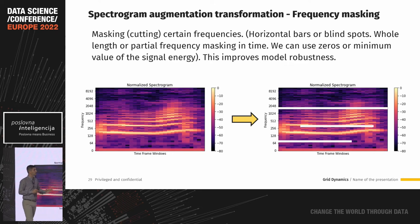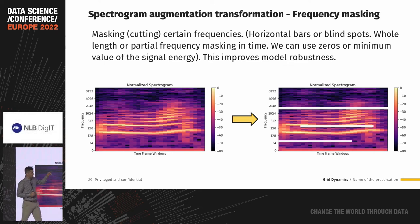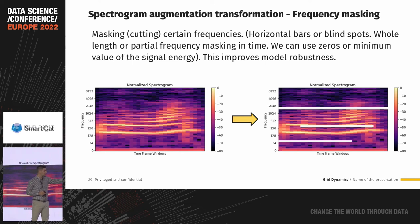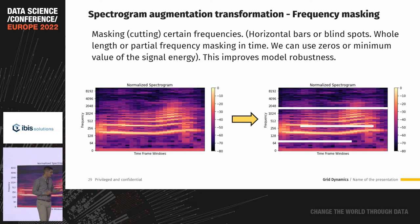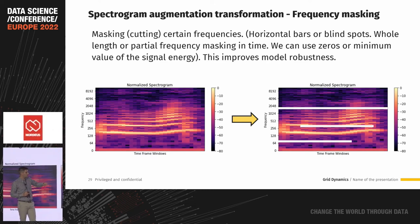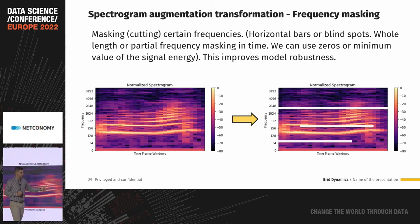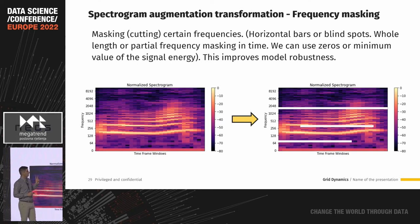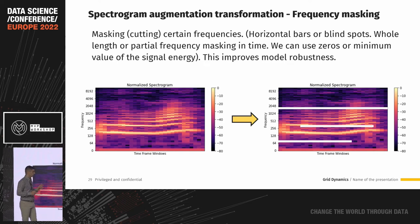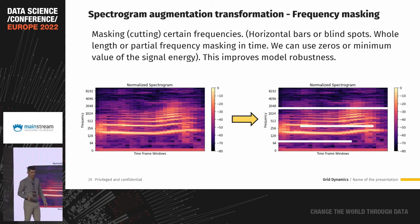A similar approach is frequency masking, where instead of time we mask frequencies — resulting in horizontal bars on the spectrogram. These can be randomly selected, and we can also specify the time range in which a frequency will be masked. These two approaches work really well with spectrograms and improve model robustness, especially when using convolutional neural networks.